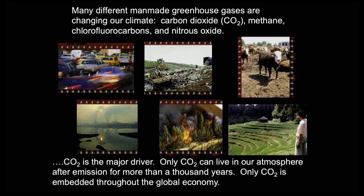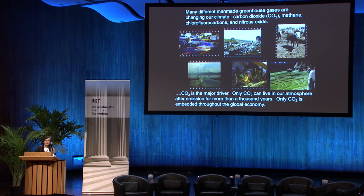CO2 isn't the only greenhouse gas we need to worry about—there are many others. But it is the main one, and it has some very special properties. Some of the others we need to worry about are certainly methane, which comes from agriculture, from cows with ruminant stomachs, and also from rice cultivation. CO2 is produced not only from fossil fuel burning but also from biomass burning. What's special about CO2 is that its radiative effect on our planet is bigger than all the rest, and it's the only one that can live in the atmosphere for more than 1,000 years—an incredibly long atmospheric residence time. It's also the only one that's embedded throughout the global economy.